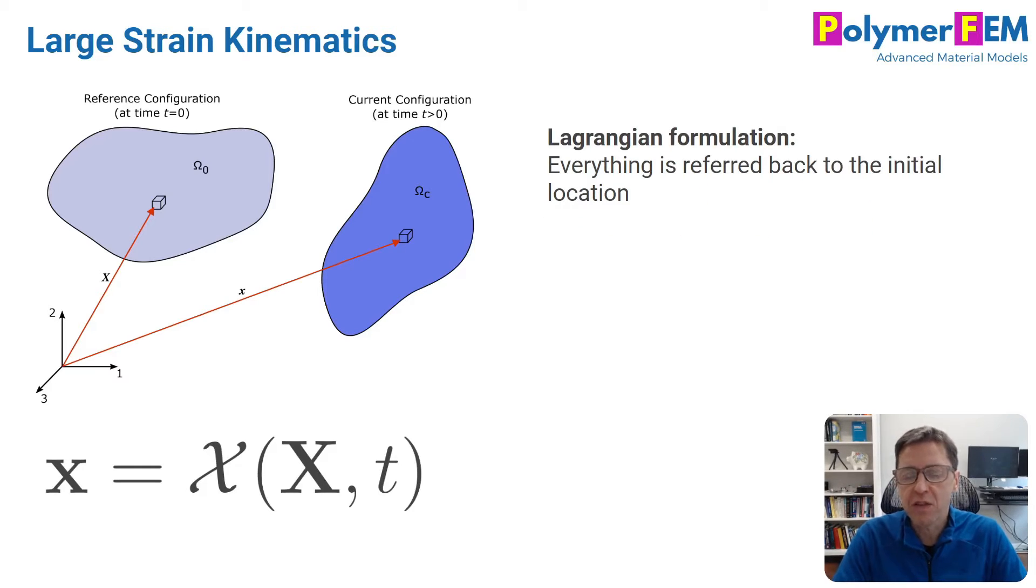There are two ways to formulate theory and equations around this. One is called the Lagrangian formulation, where everything is described back to the original initial location, so everything is a function of capital X. The other is an Eulerian formulation, where everything is referred back to the current location. Finite element programs use one of these formulations when they write down the equations and implement the code.